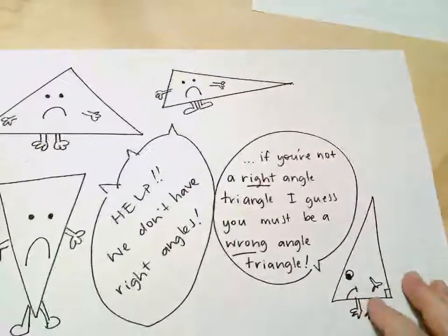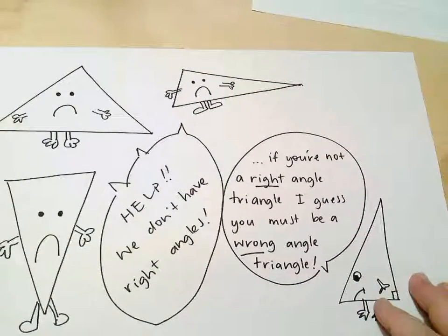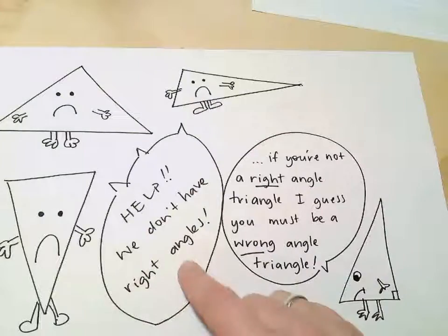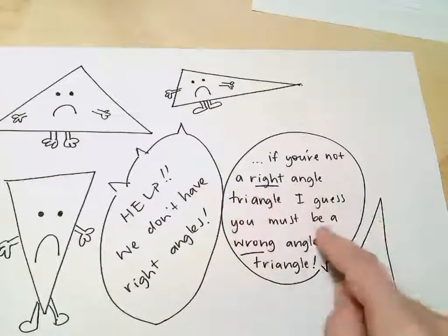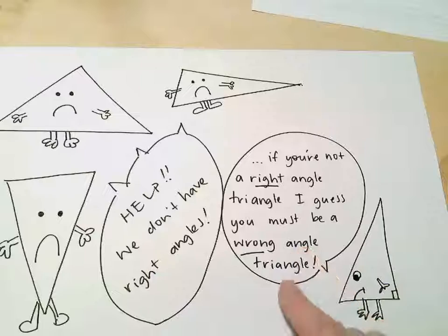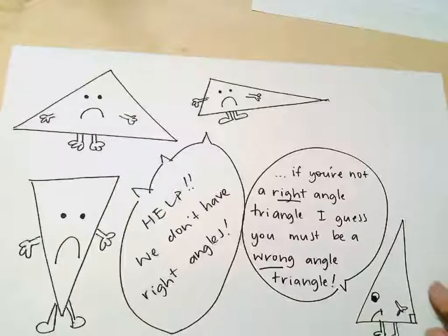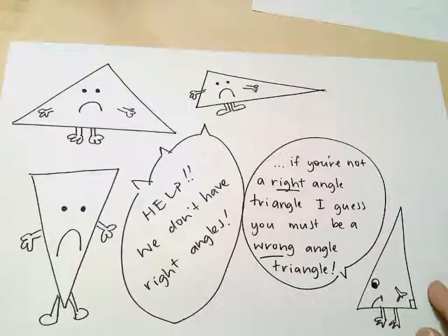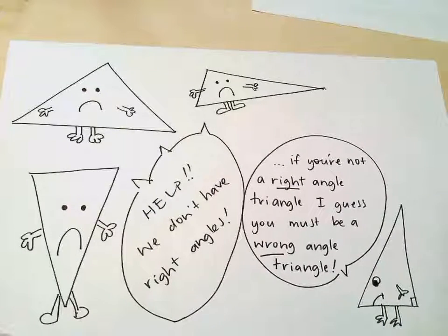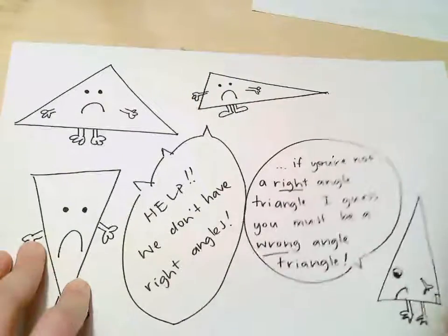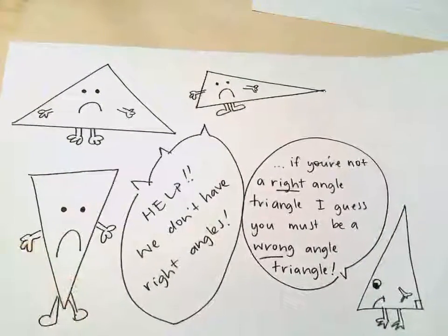So now we're looking at not right angle triangles. If you're not on a right angle triangle, I guess you must be a wrong angle triangle. We're now looking at wrong angle triangles — not right angle triangles, but wrong angle triangles. They're not actually known by that name; they're actually called obtuse angle triangles, but there's your corny joke for the video.